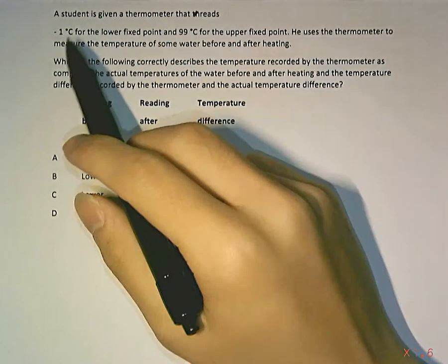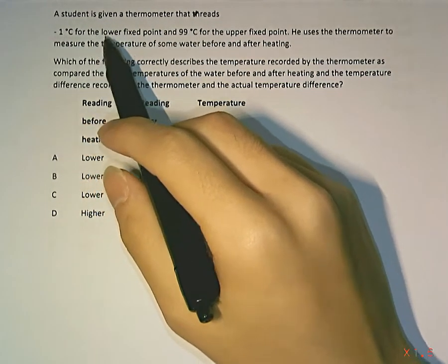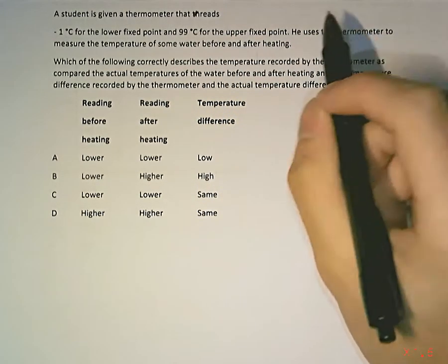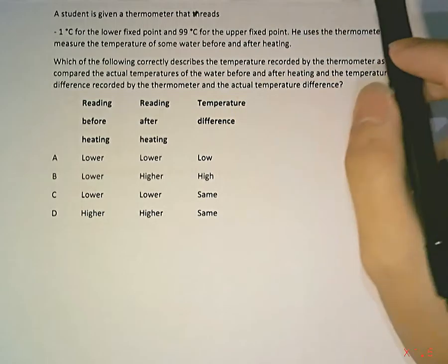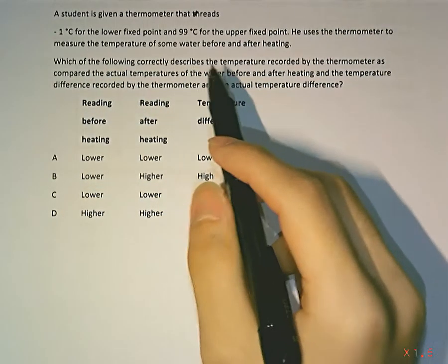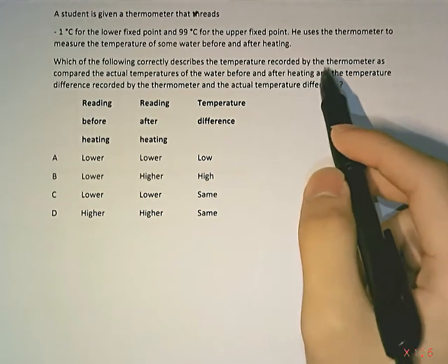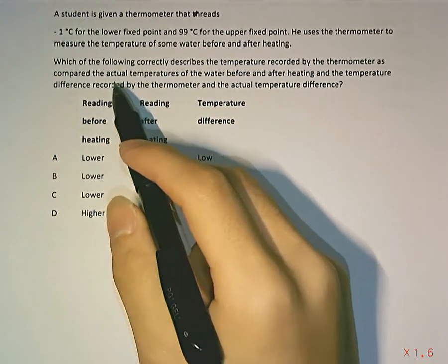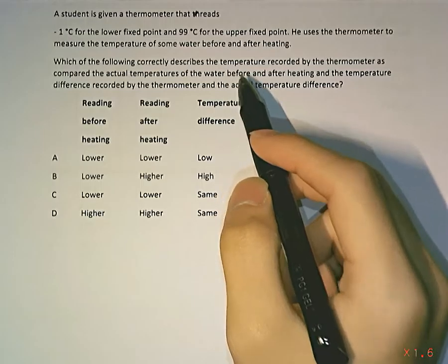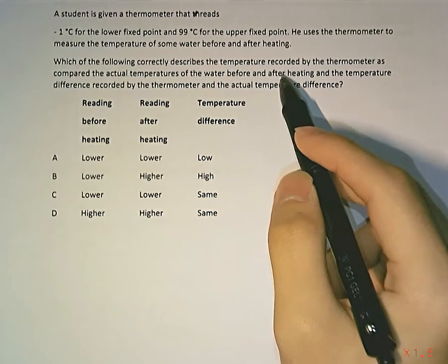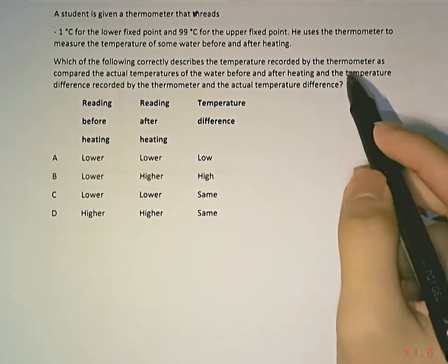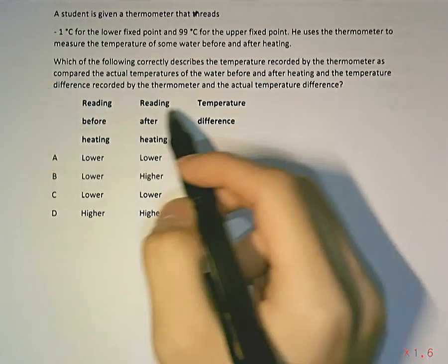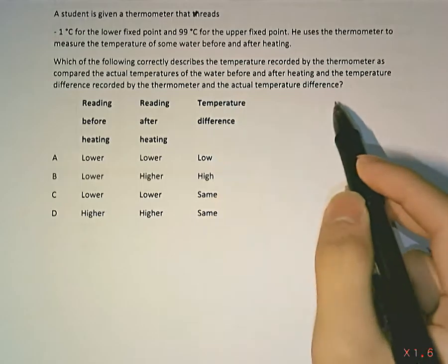A student is given a thermometer that reads negative 1 degree Celsius for the lower fixed point and 99 degrees Celsius for the upper fixed point. He uses the thermometer to measure the temperature of some water before and after heating. Which of the following correctly describes the temperature recorded by the thermometer as compared with the actual temperature difference?